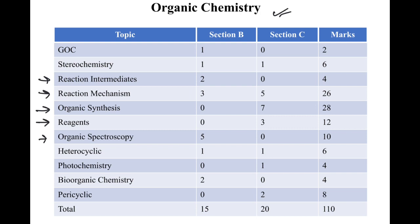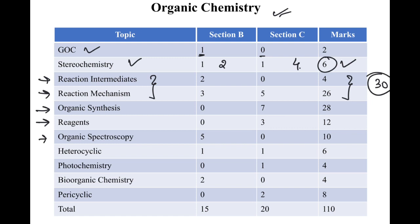In Section B there was one question from GOC; in Section C there was none, as it is a basic topic. For stereochemistry there were six marks total — one question each in Section B and C (2+4). For reaction intermediates and mechanism combined, there are 30 marks. For organic synthesis, mostly asked in Section C, there are 28 marks — knowledge comes from studying reaction mechanisms, reagents, intermediates, and name reactions.